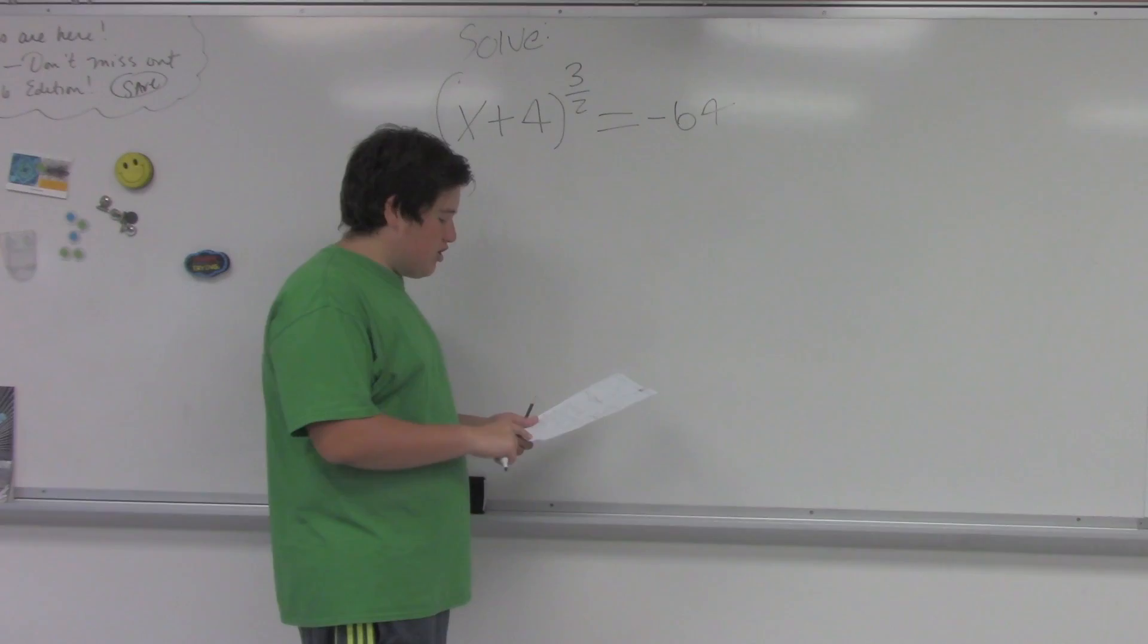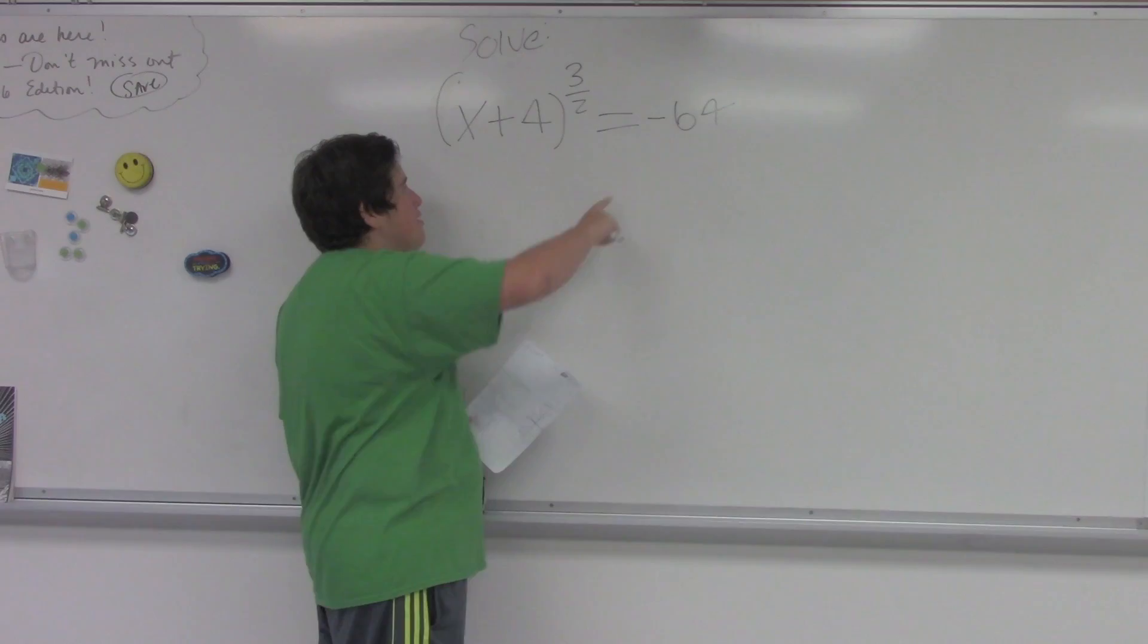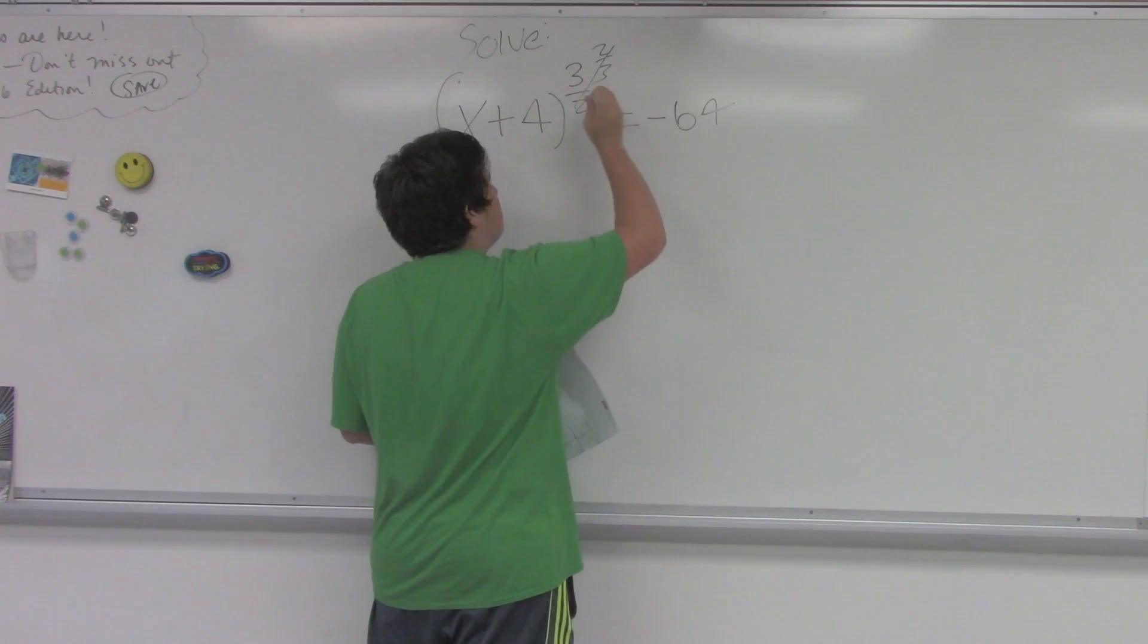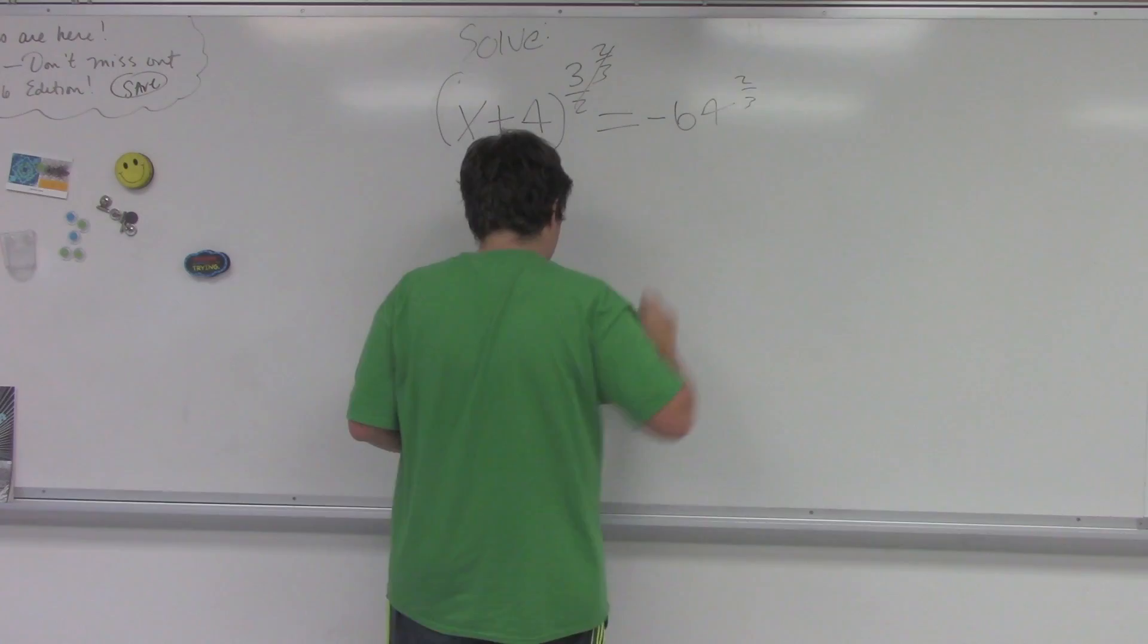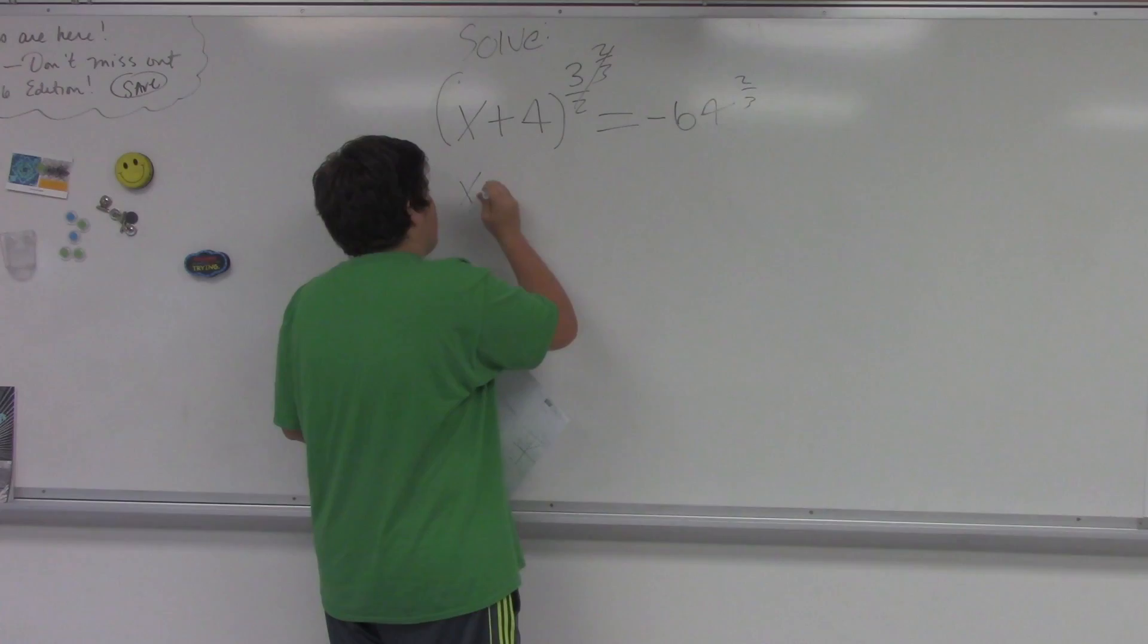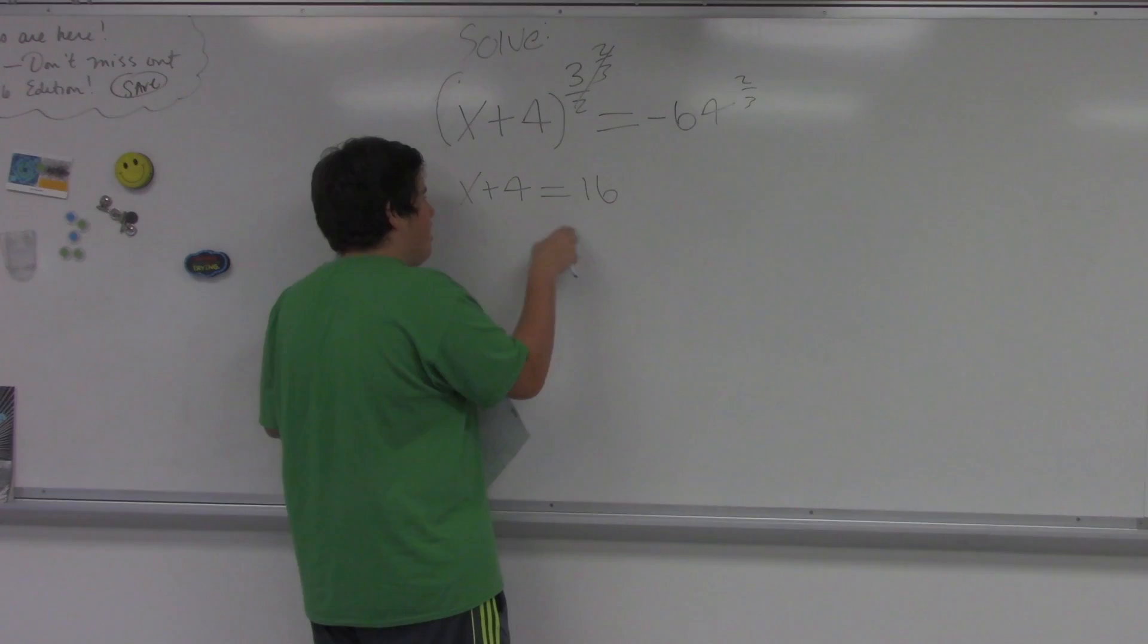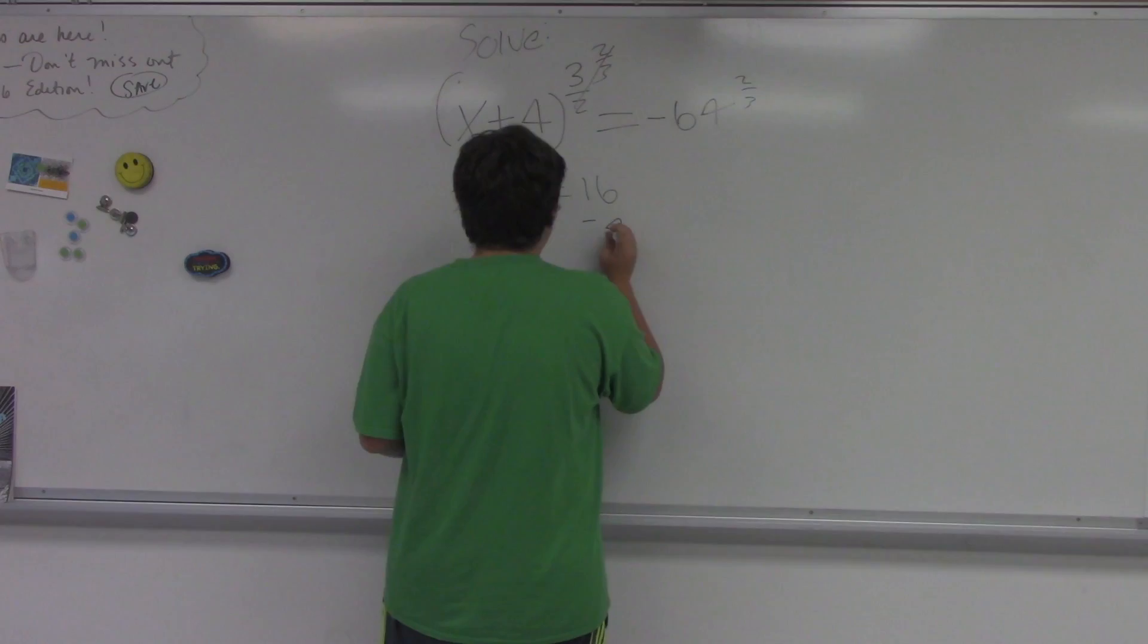So for my problem, we had to solve x plus 4 raised to the 3 over 2 equals negative 64. And the first step you want to do is you want to get the x plus 4 alone. So to do that, you're going to raise 3 over 2 to its reciprocal. So it'll cancel out. But then what you do to one side, you have to do to the other. So you have to raise this to the 2 over 3 too. And once you get that, you'll end up getting x plus 4 equals 16. You can drop the parentheses now. The 16 comes from negative 64 raised to the 2 over 3. So once you get x plus 4 equals 16, you're going to subtract 4. And what you do to one side, you have to do to the other. And then you're just left with x equals 12 as your answer.